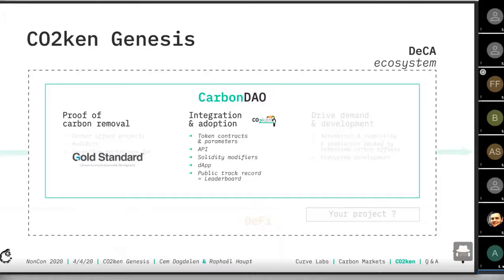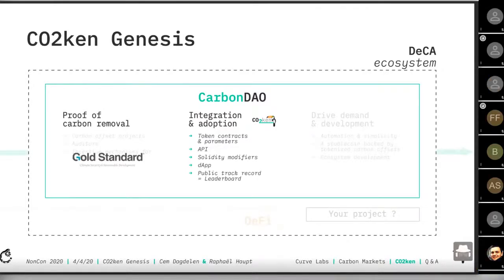We call it a leaderboard — the idea is to gamify carbon offsetting, so that companies and individuals want to be on top of this leaderboard to show their contribution towards solving the climate crisis. For proof of carbon removal, we rely on a certified body called Gold Standard, one of the most trusted certifiers today. Ultimately we aim to replace Gold Standard, but today we work with them together, tokenizing their Gold Standard certificates.